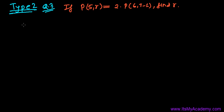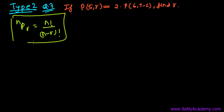I'm going to use the same formula: NPR equals N factorial divided by (N minus R) factorial. Every time we'll be using this formula, so do not get confused. NPR can also be written as PNR.